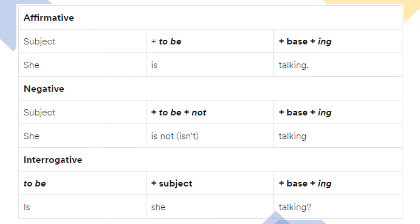Let's take a look at this table as example. In affirmative, the subject is she. And the verb to be is is. And we have the base, talk, plus ing and it will be talking.